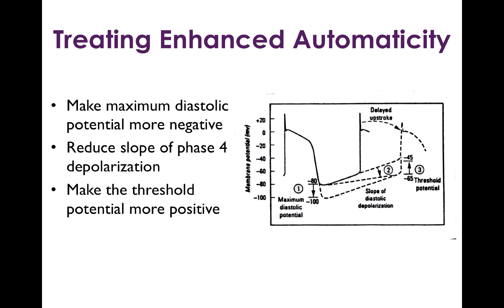Treating enhanced automaticity, shown here on the right, is a standard automatic rhythm. There are really three ways that we can treat them. The first is to make the maximum diastolic potential more negative — that is to say, hyperpolarize the membrane potential so that it takes longer for that phase 4 depolarization to hit threshold. The second way is to reduce the slope of phase 4 depolarization so that it takes longer again for the action potential to hit threshold.